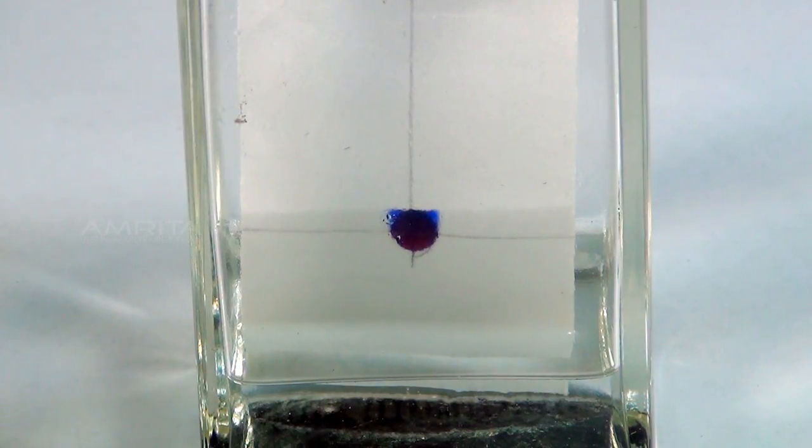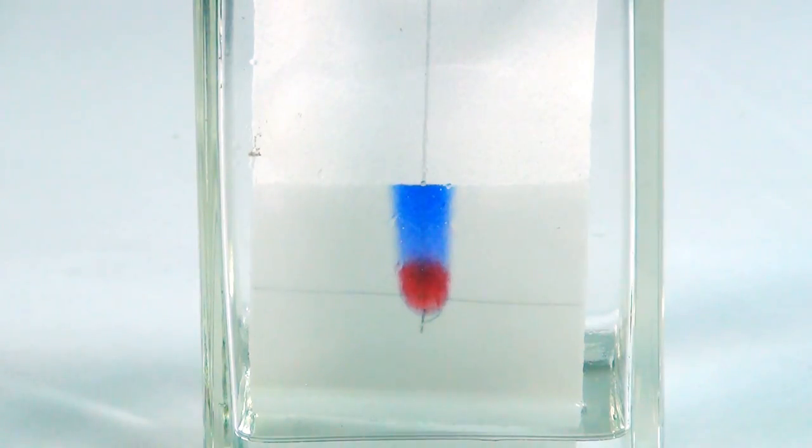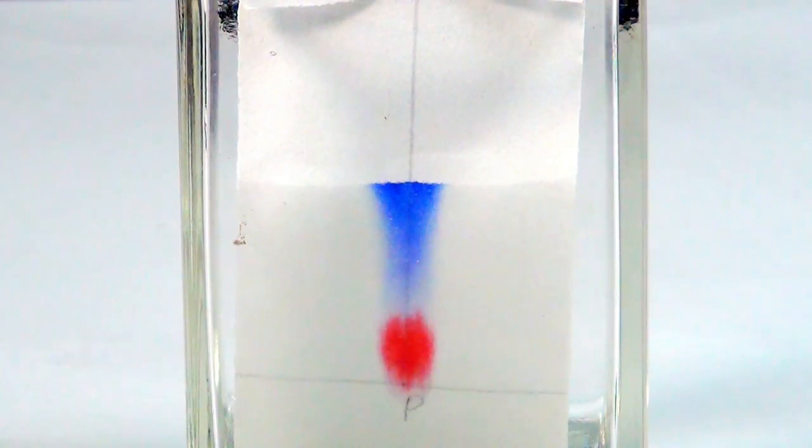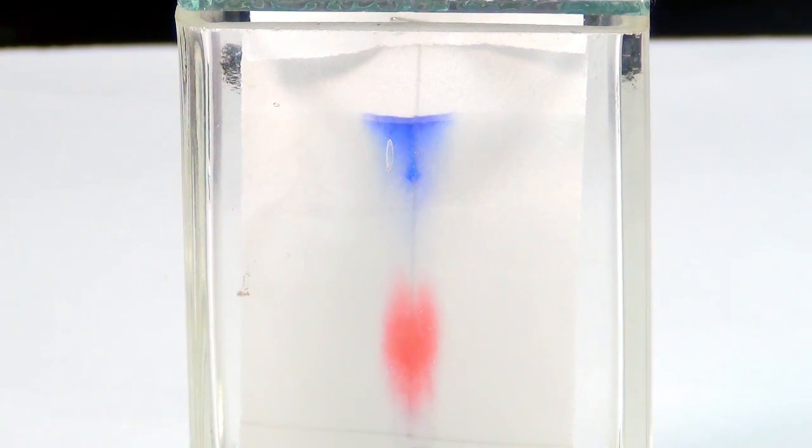Keep the chamber undisturbed for some time. Notice the rising solvent along with the red and blue inks. After the solvent has risen, you will notice two different spots of blue and red colours on the filter paper.